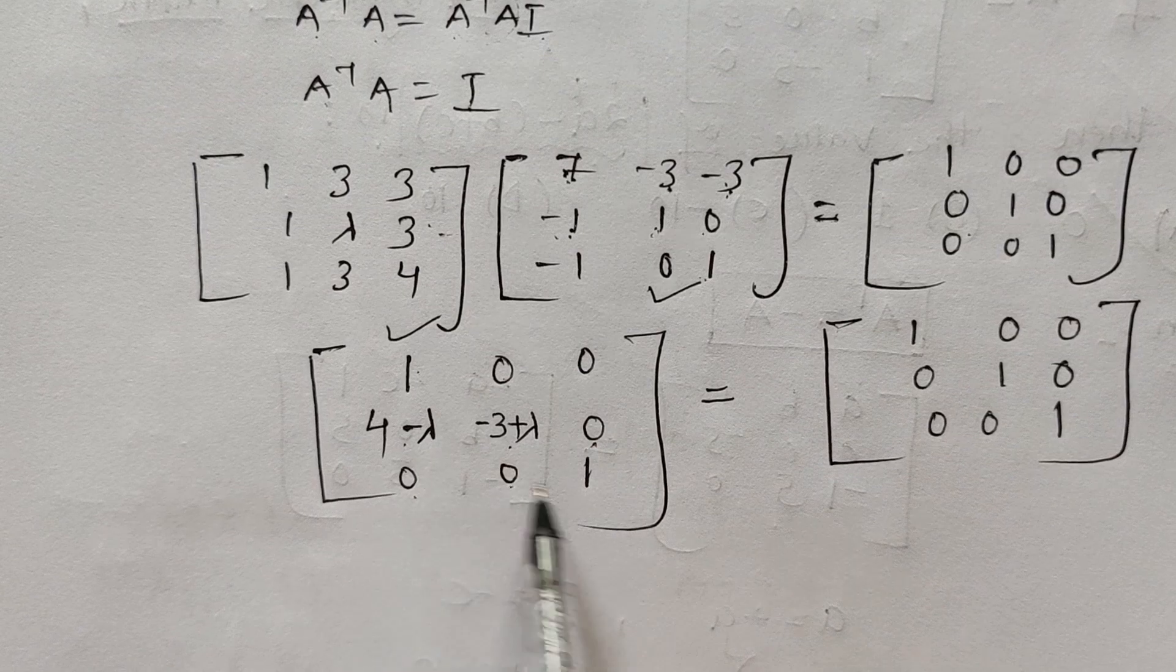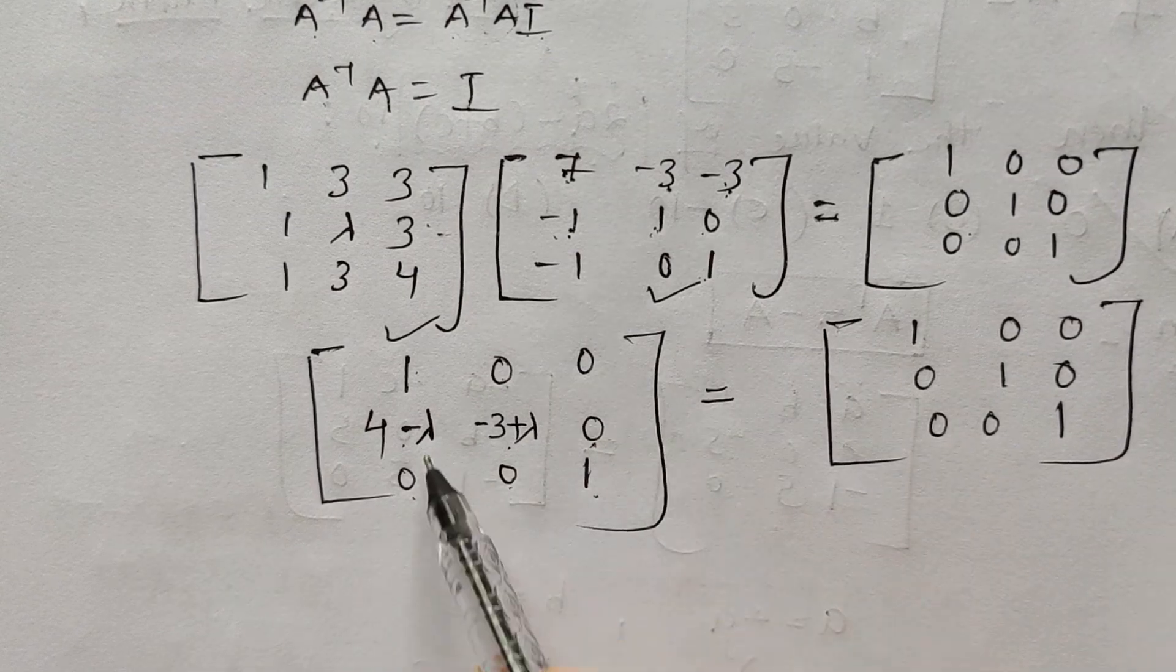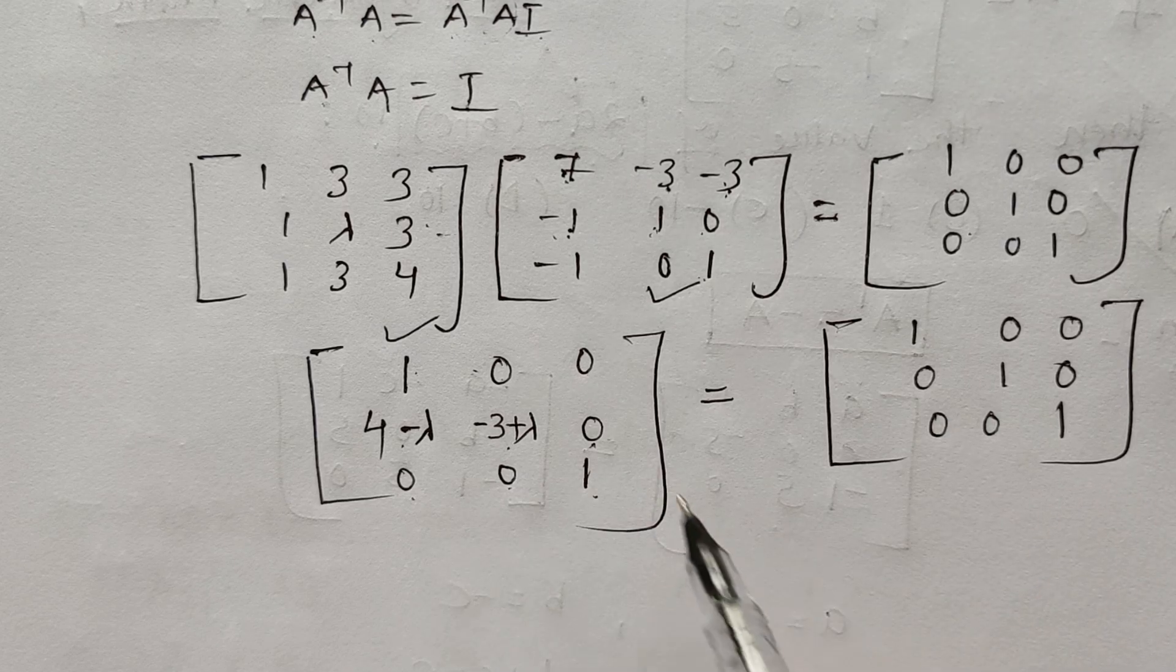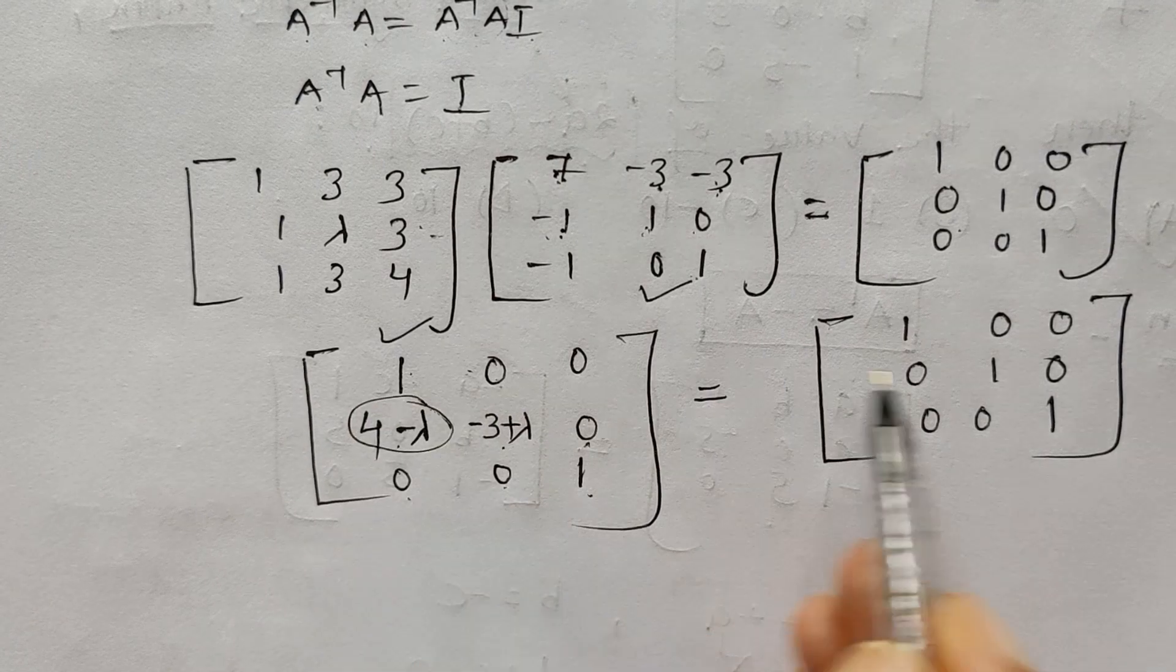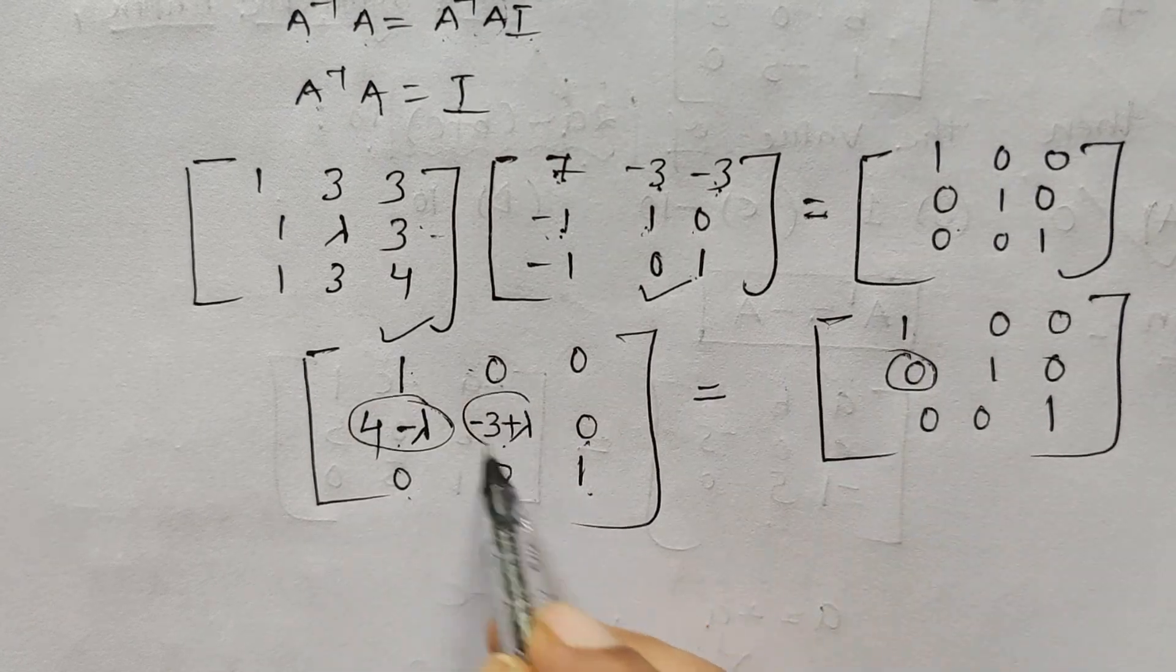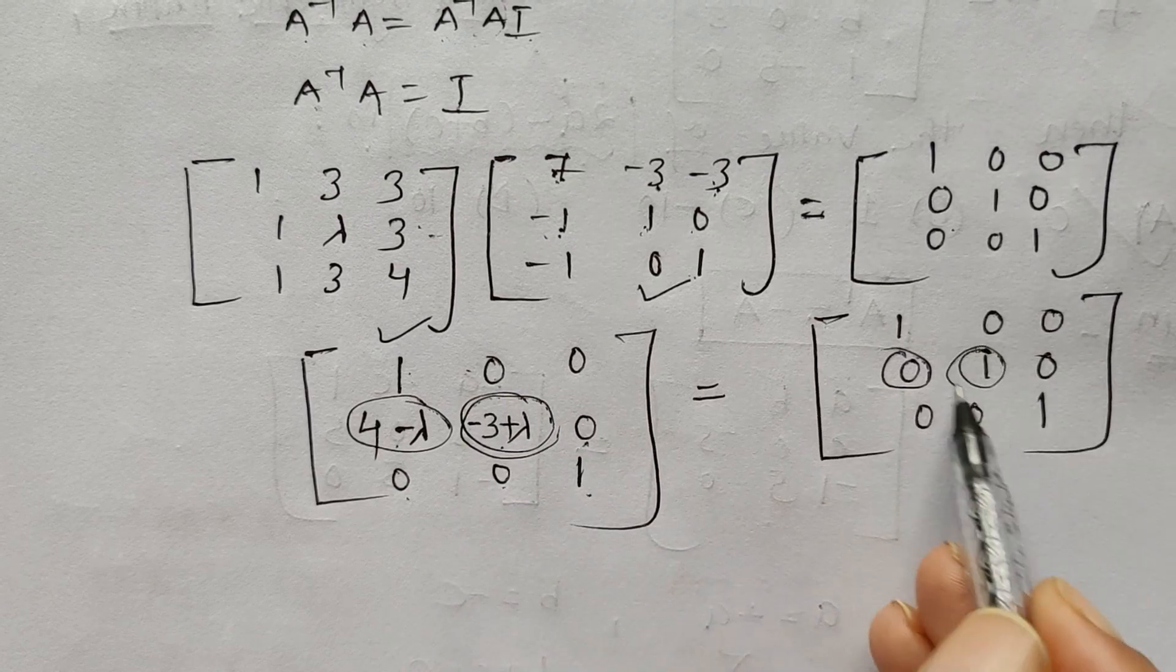If I compare this with the corresponding element, what do I get? I get 4 minus lambda equals 0, which gives lambda equals 4, like I got in the previous video.